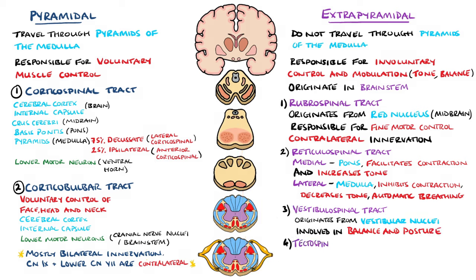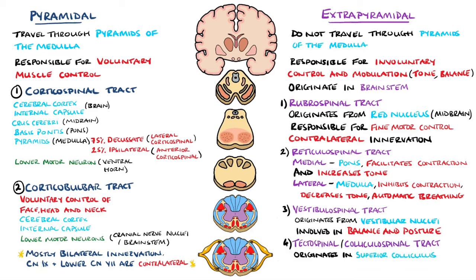Then we have the tectospinal tract, also known as the colliculospinal tract, which originates from the superior colliculus of the midbrain. This tract is involved in the coordination of head and eye movements, and the superior colliculus receives inputs from the eyes, which explains this function. This tract decussates and therefore provides contralateral innervation.